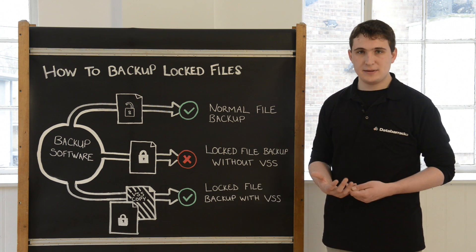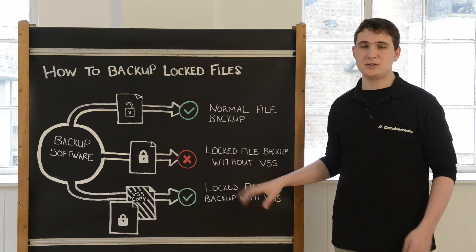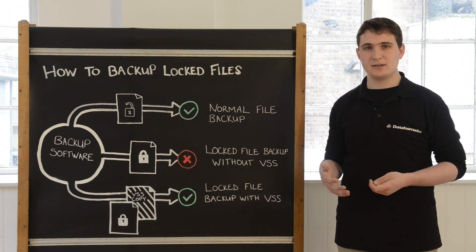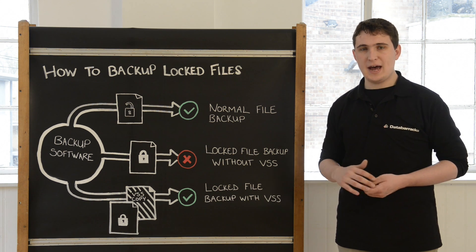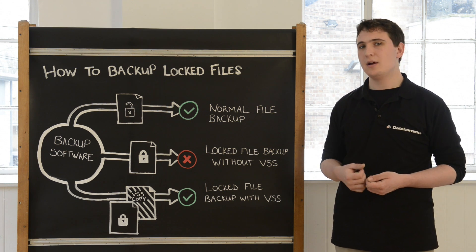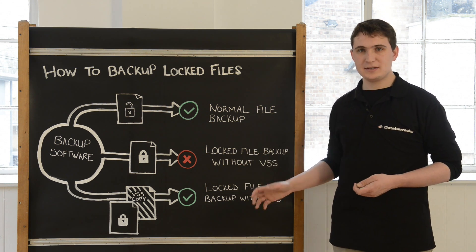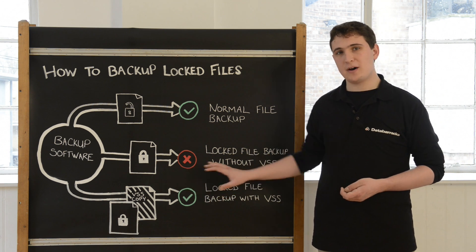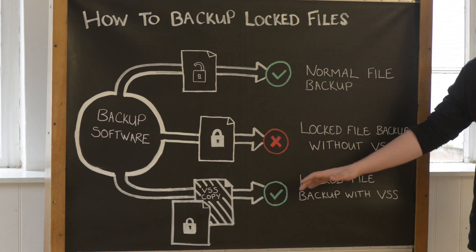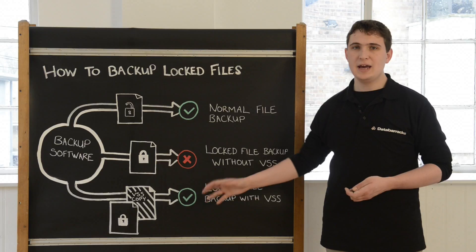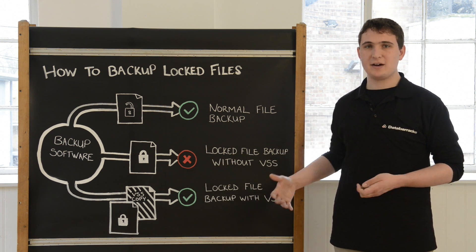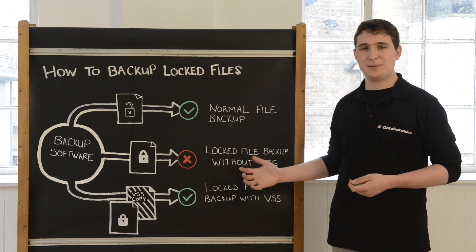Therefore, one way to get around this is to enable something called VSS, or Volume Shadow Copy. Volume Shadow Copy is a Windows service that runs in the background, and what the backup software can do is request that a volume shadow copy is taken of those files. The volume shadow copy sits just behind the original file, and when the backup comes along it will look at the VSS copy — the shadow edition of that file — in order to back it up. This is a good way of circumventing the issue where we can't back up locked files due to users or applications holding them open.